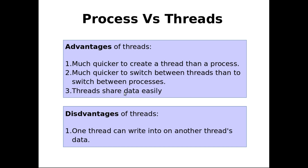Also, sharing data between threads is much easier, as I already explained in the previous slide. However, there is one disadvantage of threads. The disadvantage is that one thread can write into another thread's data. Because all threads are sharing the same data segment, it can happen that one thread will write by mistake to another thread's data, and that may corrupt the data of the other thread. This possibility exists in threads, which is not possible in the case of processes.